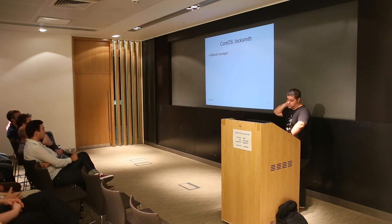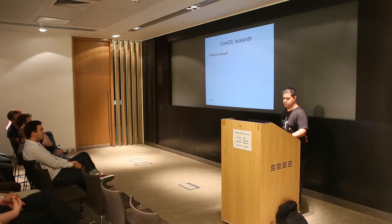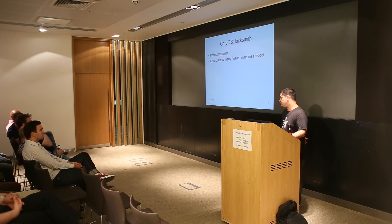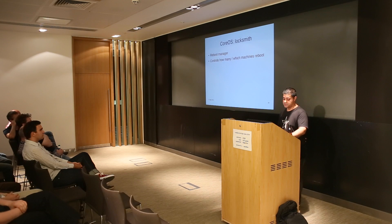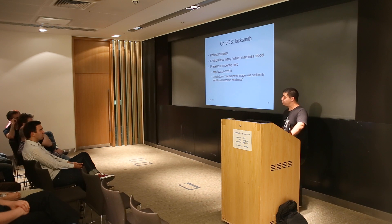The last component is Locksmith, which is essentially a reboot manager. One of the features EtcdD implements is semaphores — you can do an atomic get and set, similar to Redis. With Locksmith, you can decide how many machines and which machines to reboot, based on metadata, how long the machine has been running, or whether it even has any services. The idea is to prevent a thundering herd problem. A few weeks ago, a US university did a Windows 7 rollout, said go, and every single machine in the entire university rebooted — including the machine doing the deployments — so they spent about a week in recovery. Locksmith is designed to prevent that: when you upgrade, you don't upgrade everything all at once.